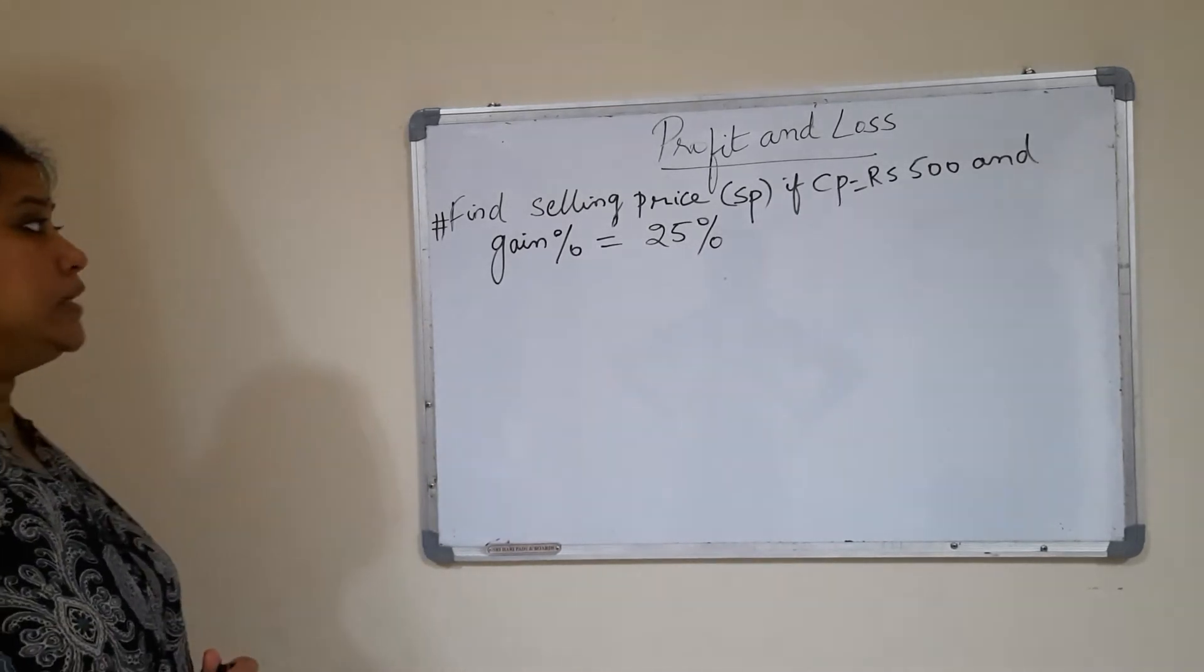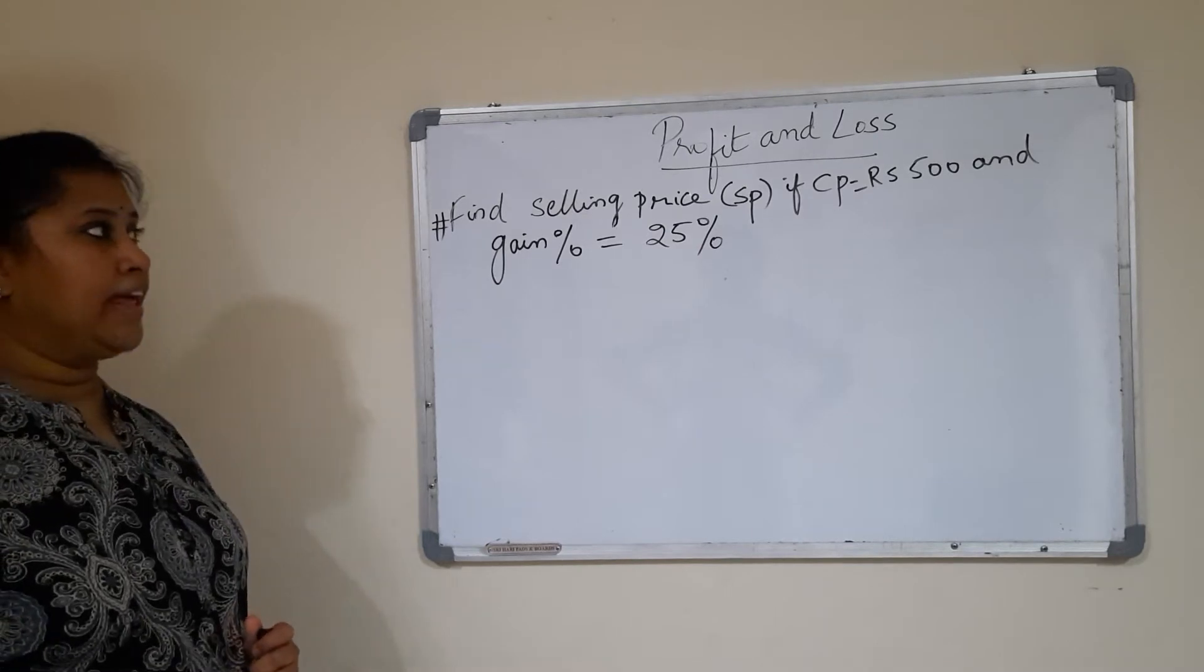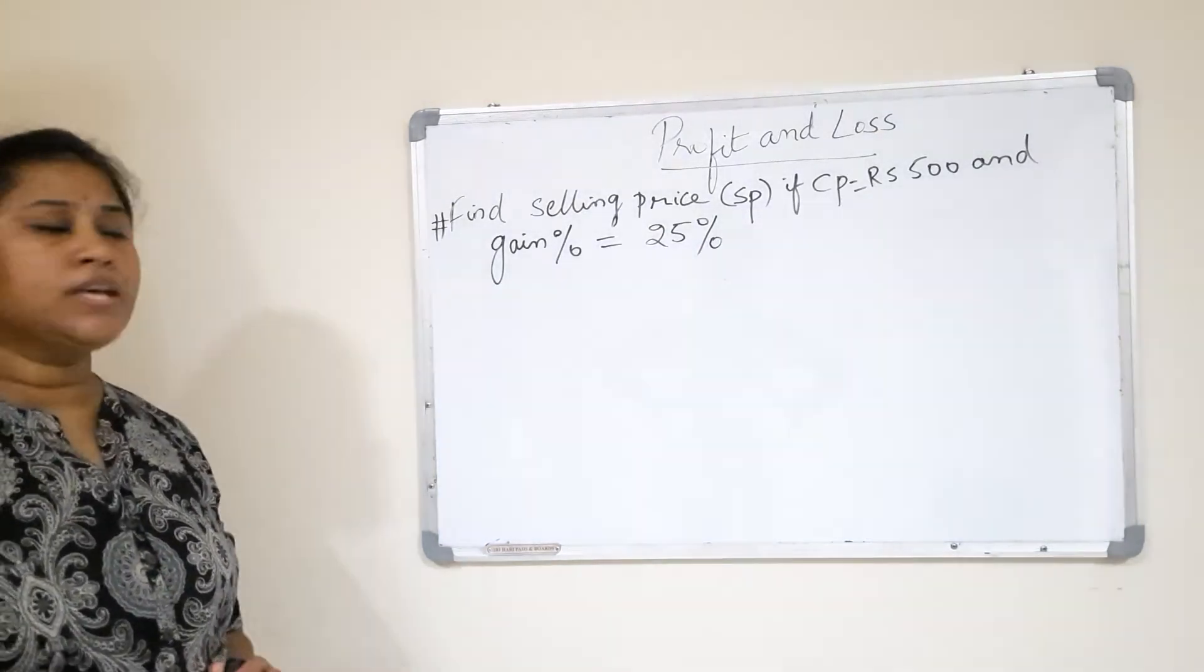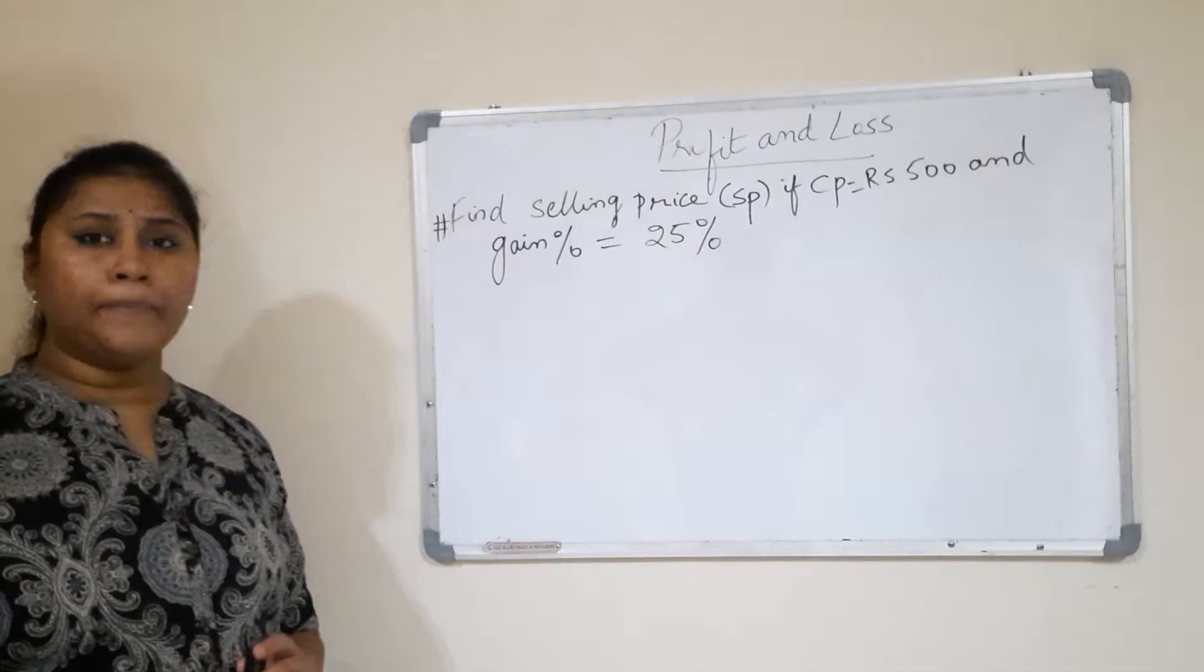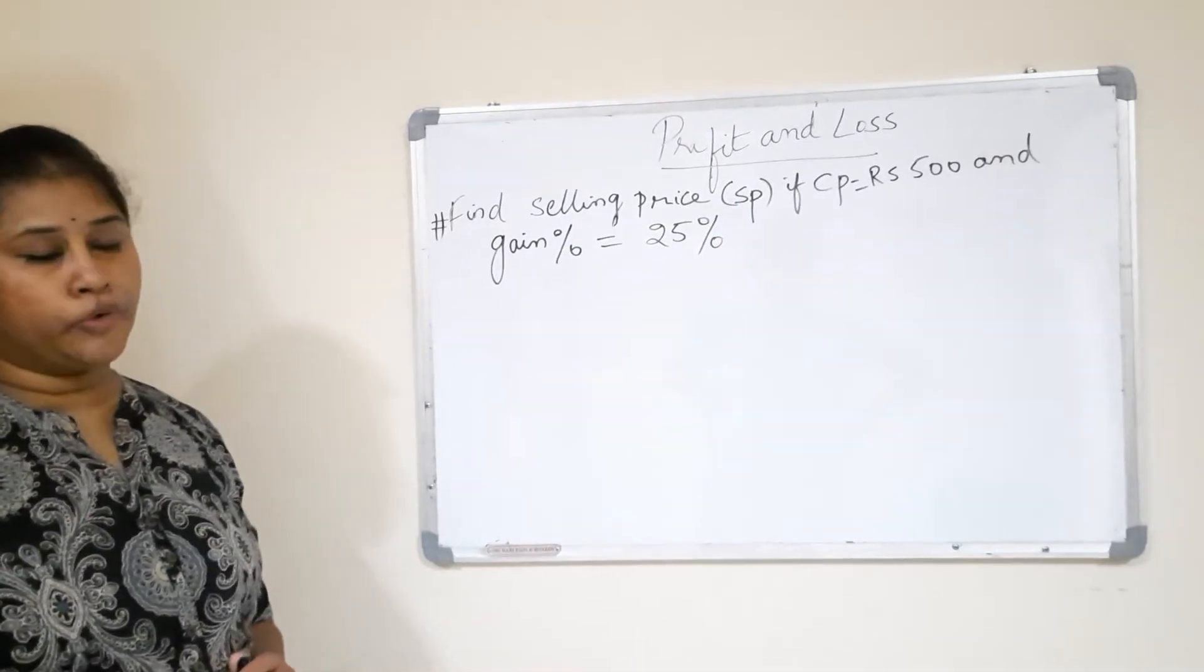Generally what we do is find the gain and then add it to CP. But there is a simple trick to solve this problem instead of doing all that.